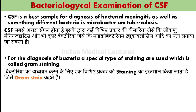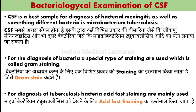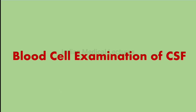Gram staining: when we add the stain to CSF, if bacteria are present, we can see gram-positive and gram-negative bacteria under the microscope. For the diagnosis of tuberculosis bacteria, acid-fast staining is mainly used. MTB bacteria have high mycolic acid in their cell wall, so they are acid-fast in nature. Therefore, for tuberculosis we use acid-fast staining, which is a very important staining method.